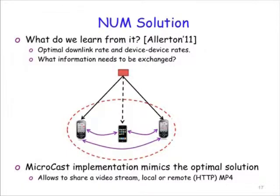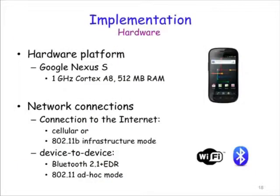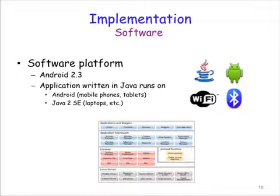The solution to the NUM problem also highlights what information needs to be exchanged for the smartphones to take optimal decisions. Then, mimicking the structure of the optimal control, we designed a practical scheme called Microcast that allows smartphones to share a video stream, locally or remotely stored. Our current testbed is based on Google Nexus S phones with a 1 GHz processor and 0.5 GB RAM. These phones connect to the internet through cellular or Wi-Fi and to each other through Bluetooth or Wi-Fi. We implemented our software at the application layer in Java on the Android platform, and it also runs on laptops with a regular operating system.